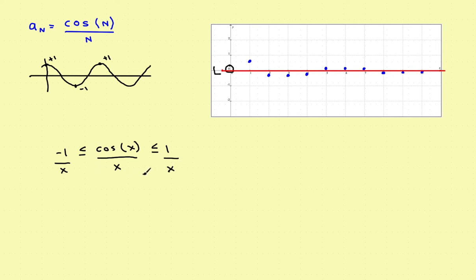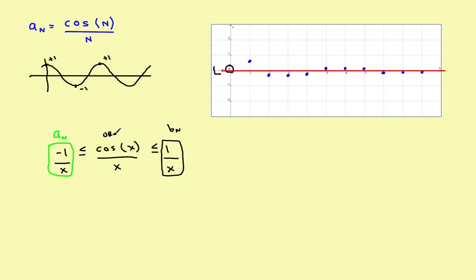So a_n = -1/x is the lower sequence, b_n = 1/x is the upper sequence, and c_n = cos(x)/x is your original sequence in the middle. Now you have an upper and lower bound and you're ready to prove convergence. Going back to the definition, you need three steps.